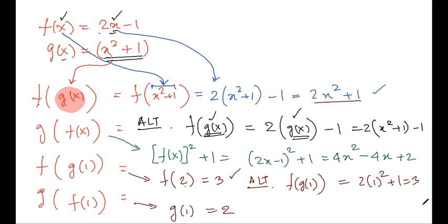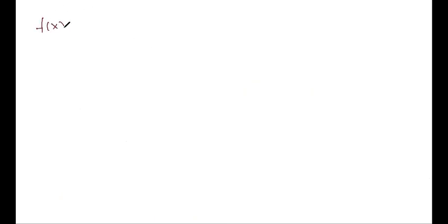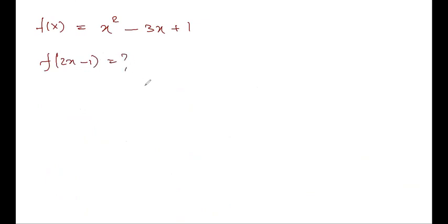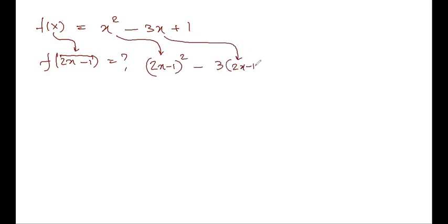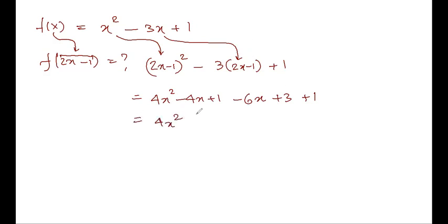If f(x) equals x squared minus 3x plus 1, then to find f(2x minus 1), replace every x with (2x minus 1): giving (2x minus 1) squared minus 3(2x minus 1) plus 1, which expands to 4x squared minus 4x plus 1 minus 6x plus 3 plus 1, simplifying to 4x squared minus 10x plus 5.